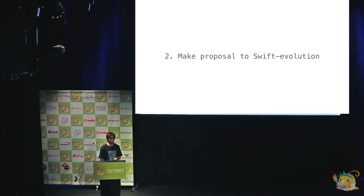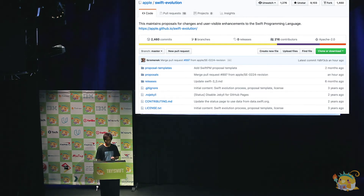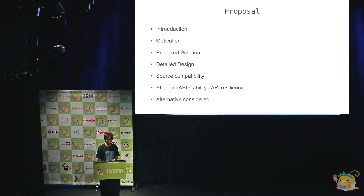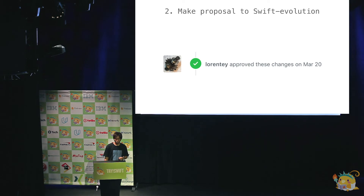Now let's make a proposal to Swift Evolution. All proposals exist on the Swift Evolution repo. Using the template in Swift Evolution, I made a proposal. The proposal contains an introduction, motivation, proposed solution, detailed design, and so on. During this process, the content was no problem, but a reviewer corrected my grammatical mistakes, which I'm grateful for.